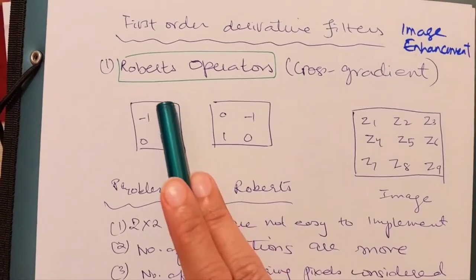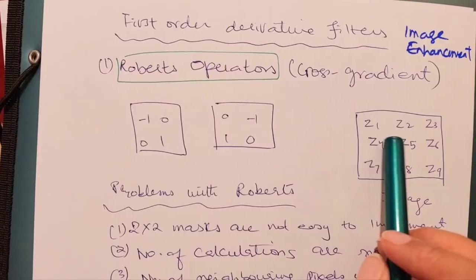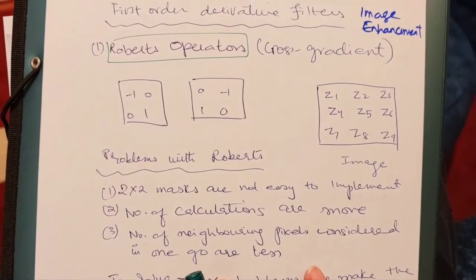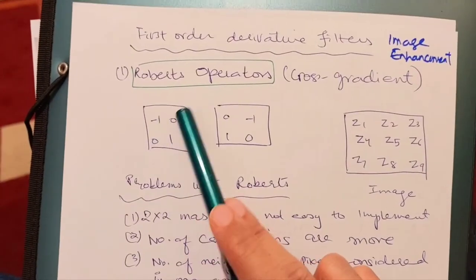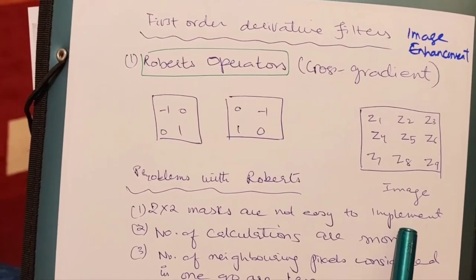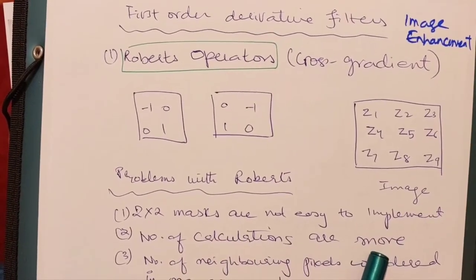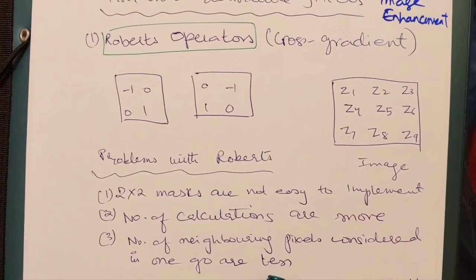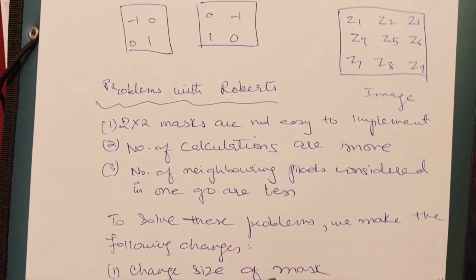If we have an image where the Z values represent the pixels, we can apply this filter on the required pixels where we want to perform enhancement. However, there are some problems with Roberts operators. First, they are 2x2 masks — because the size is very small, they are not efficient to implement. Moving them from pixel to pixel requires many calculations, and fewer neighboring pixels are considered at once, so it needs more time and more computation.